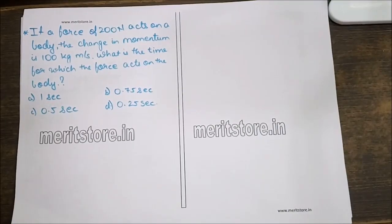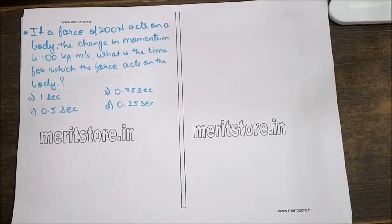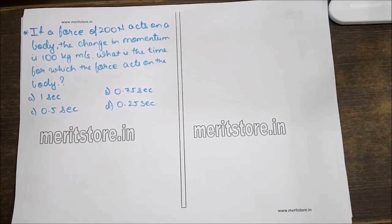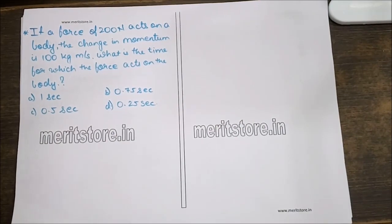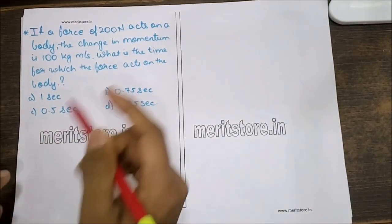If a force of 200 N acts on a body, the change in momentum is 100 kg meters per second. What is the time for which the force acts on the body? The four options are 1 second, 0.75 seconds, 0.5 seconds, and 0.25 seconds.